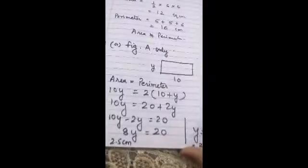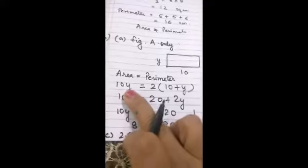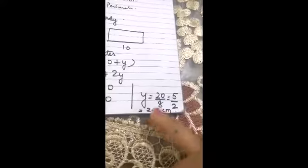So this comes out to be when we put area is equal to perimeter it becomes a simple equation. We will solve it and we get Y is equal to 5 by 2 which is equal to 2.5 cm. So the option C is correct for question number 2.